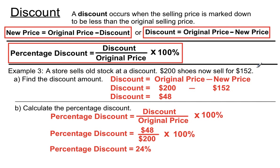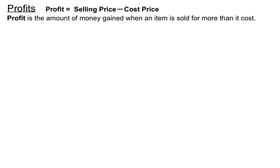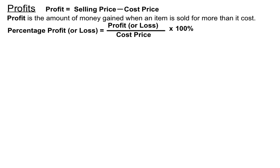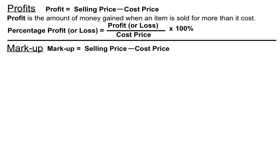Between profits, markups and discounts there are very similar calculations — a few subtractions between prices, then creating a fraction and turning it into a percentage. Recap: profit equals selling price minus cost price. Percentage profit or loss puts the profit or loss on top, over the cost price, multiplied by a hundred percent.